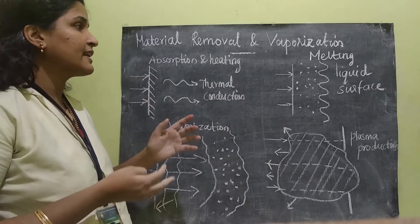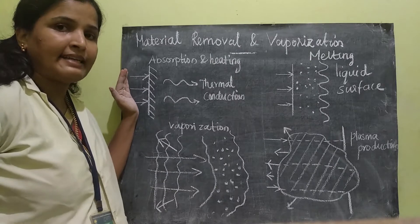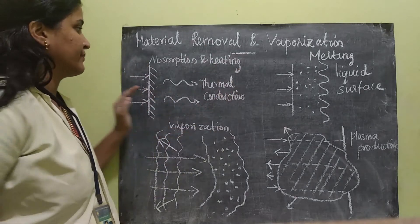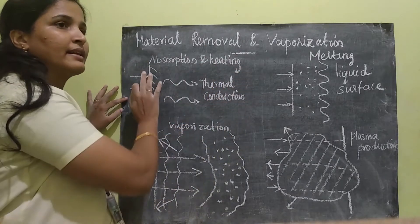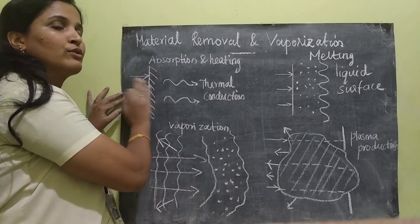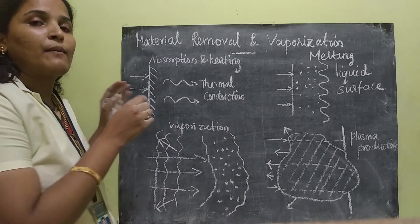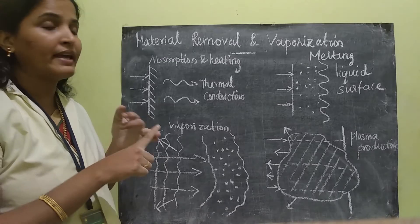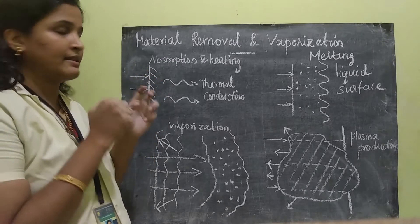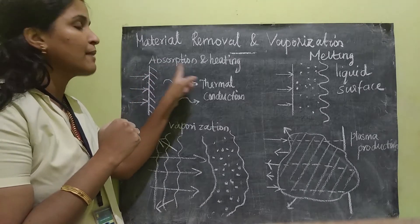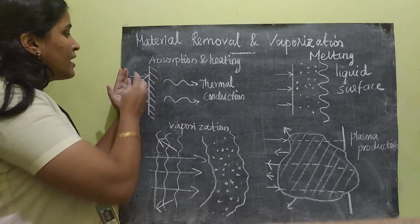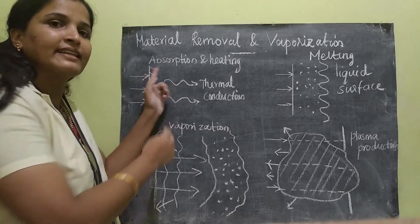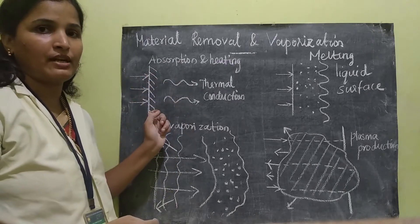Initially, when the laser light is allowed to fall on a material — for instance, this is a material — when it is allowed to fall on the material, part of the wave will be reflected and part will be absorbed. So due to the absorption, it will penetrate or go inside the material.